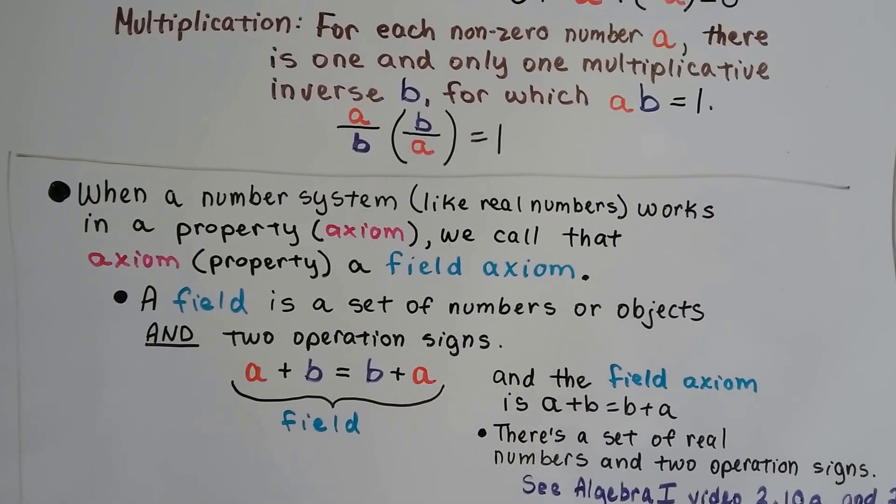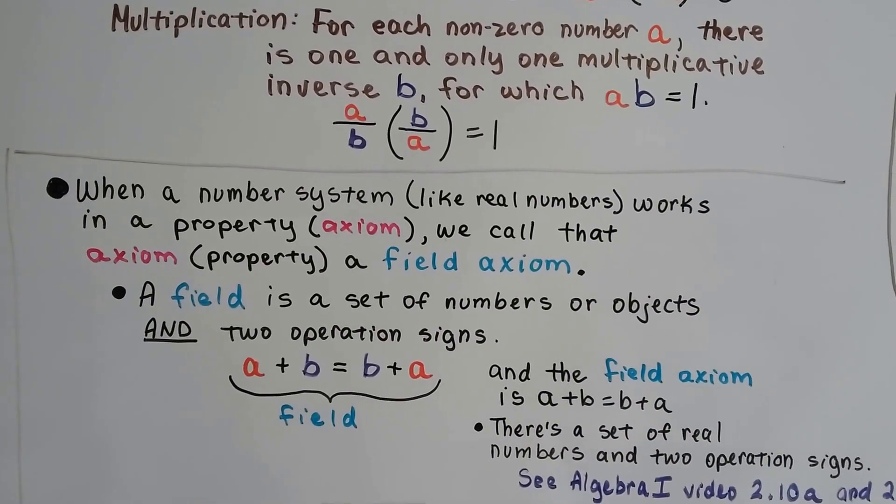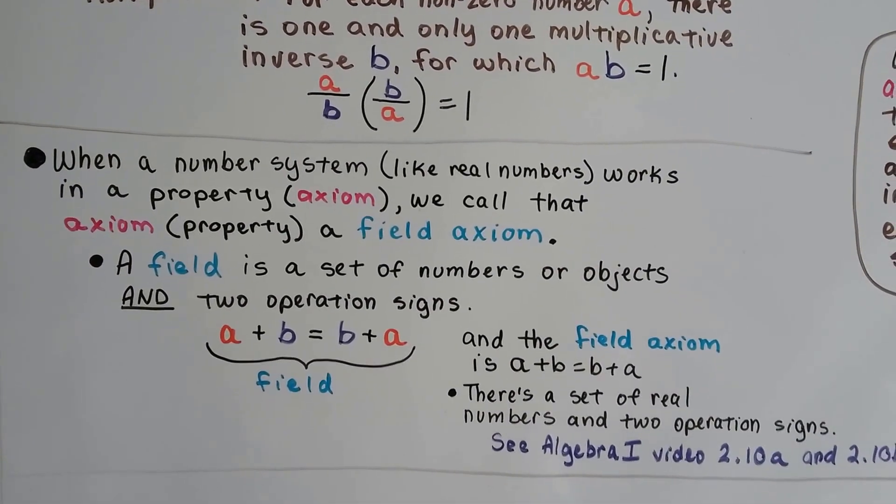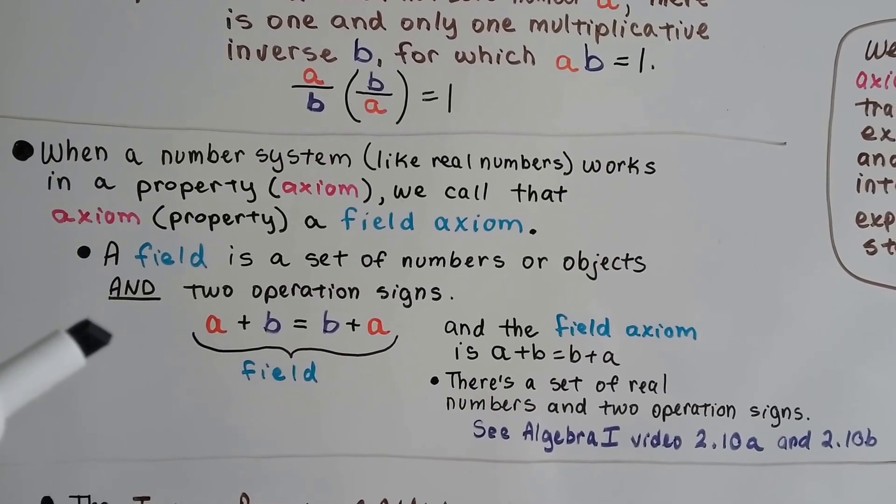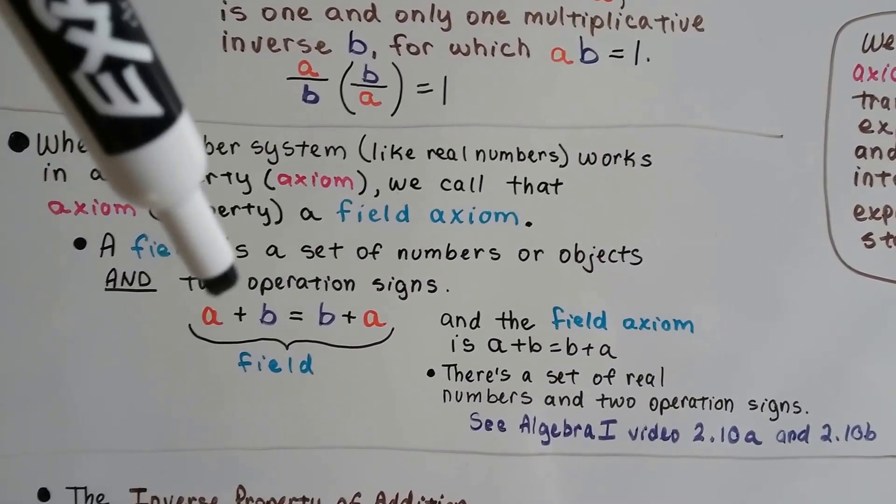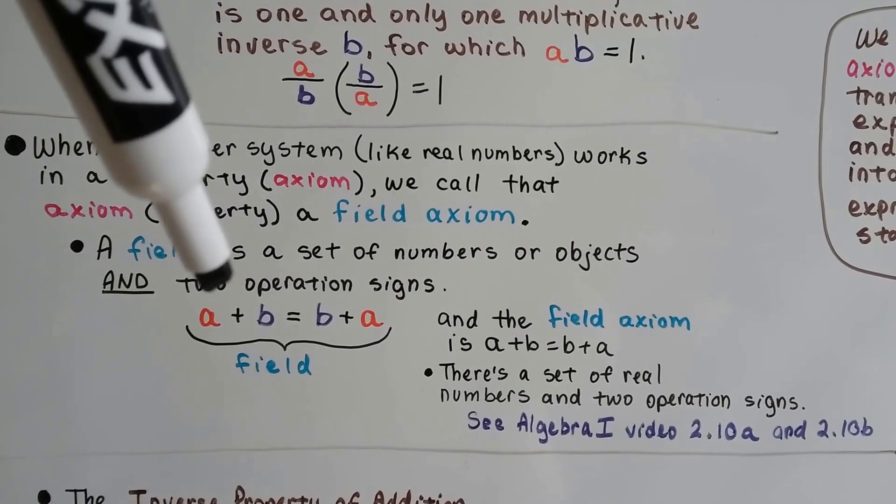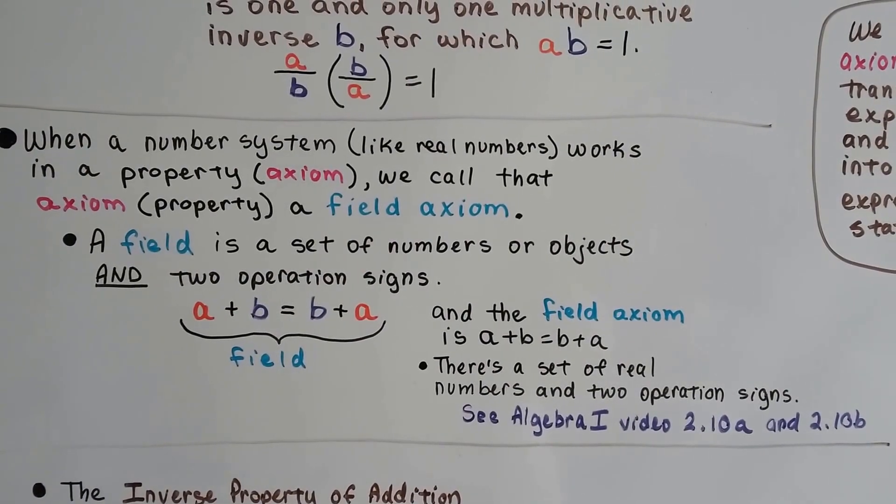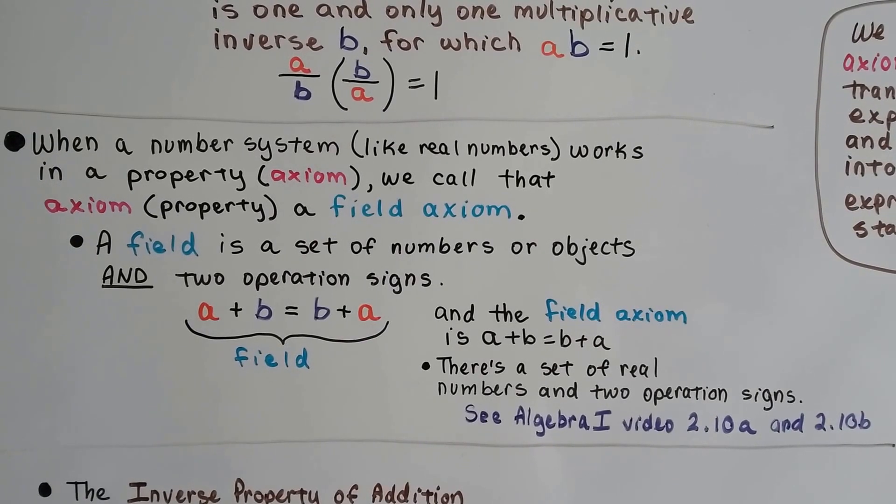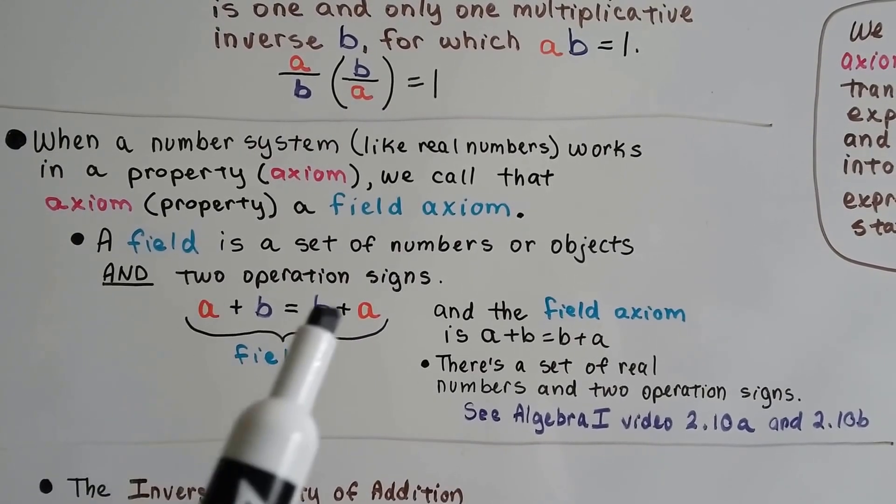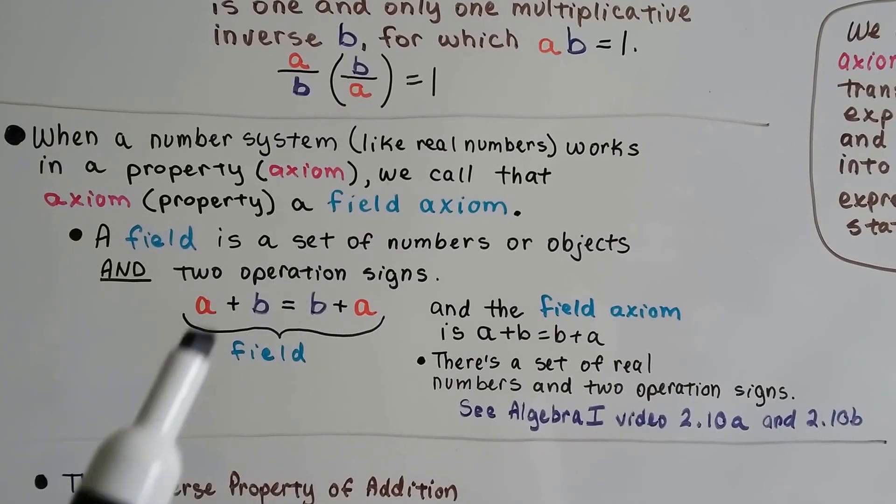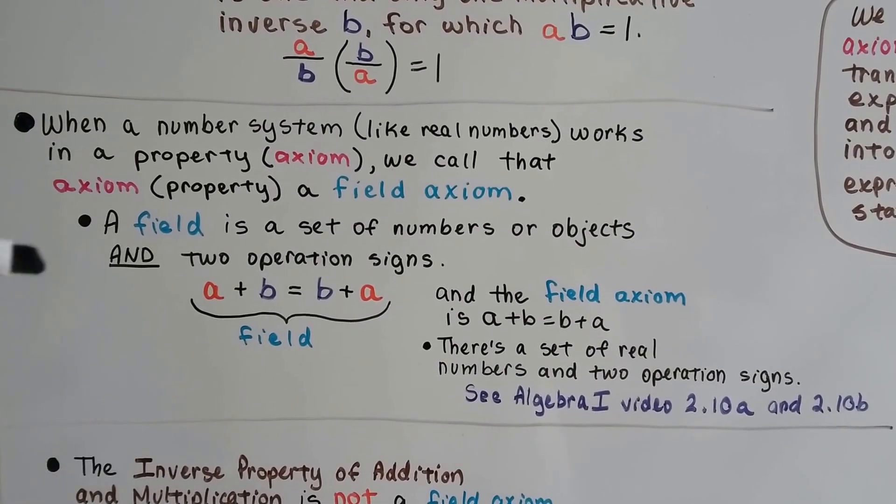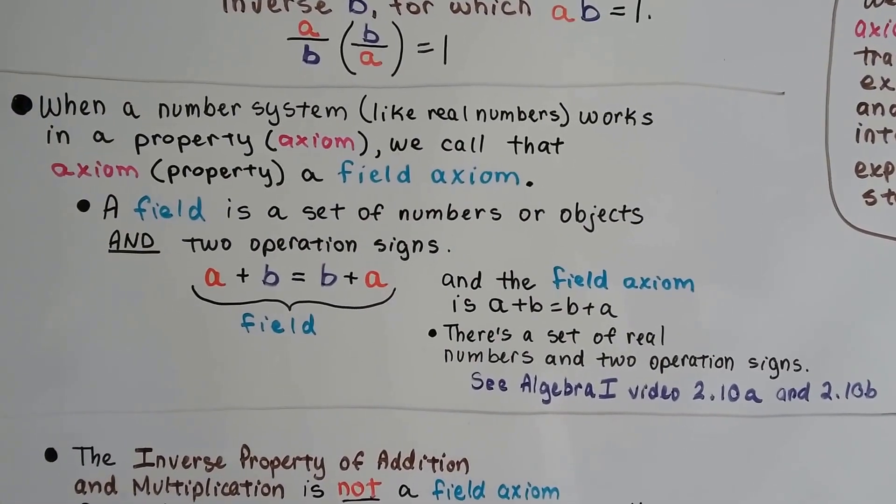So when a number system, like real numbers, works in a property, an axiom, we call that axiom, that property, a field axiom. So all a field is, is a set of numbers or objects and two operation signs. So this is the commutative property. It says that if we have A plus B, it's going to equal B plus A. This is the field. And the field axiom is A plus B equals B plus A. We've got numbers. We've got real numbers and two operation signs. So this is the field, and the field axiom is this. It's that property.